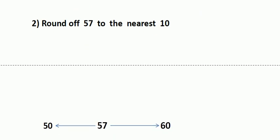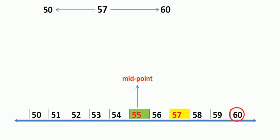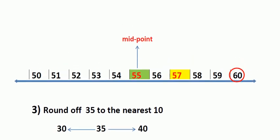Next question: round off 57 to the nearest ten. Step one: find in between which tens the number 57 lies. 57 lies between 50 and 60. Next, we mark the number 57 on the number line. The number 57 comes after the midpoint 55, so we will round 57 to 60.